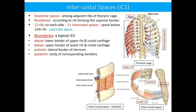As regards the boundaries of a typical intercostal space: it is bounded above by the lower border of the upper rib and the costal cartilage, below by the upper border of the lower rib and the costal cartilage, anteriorly by the lateral border of the sternum, and posteriorly by the body of the corresponding vertebra.